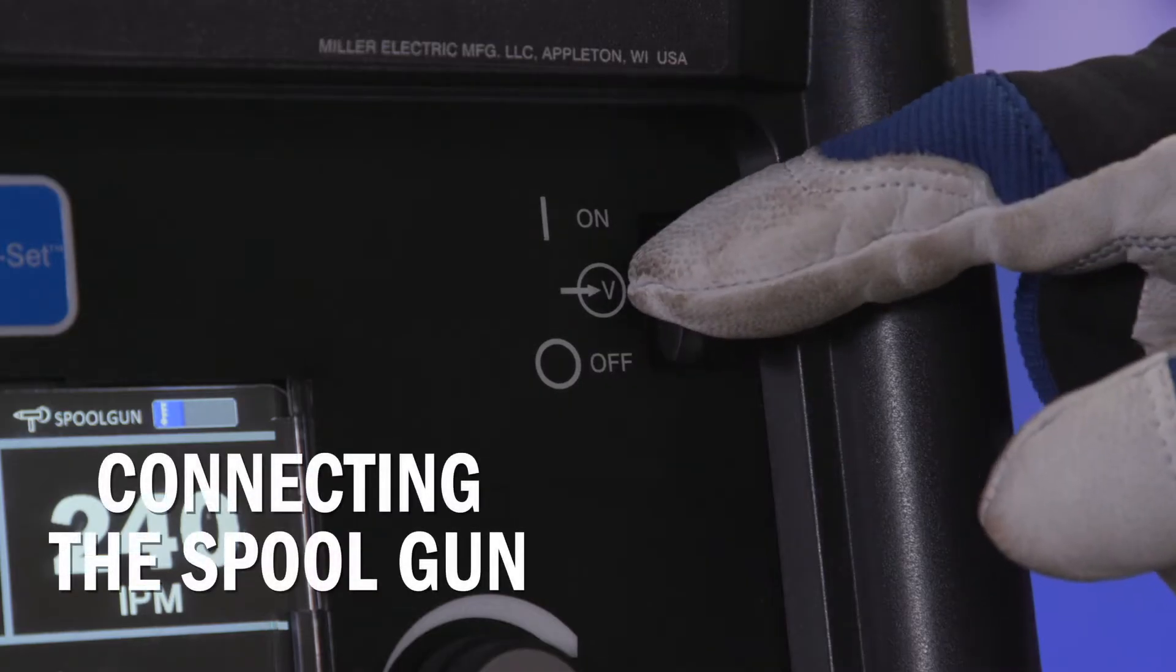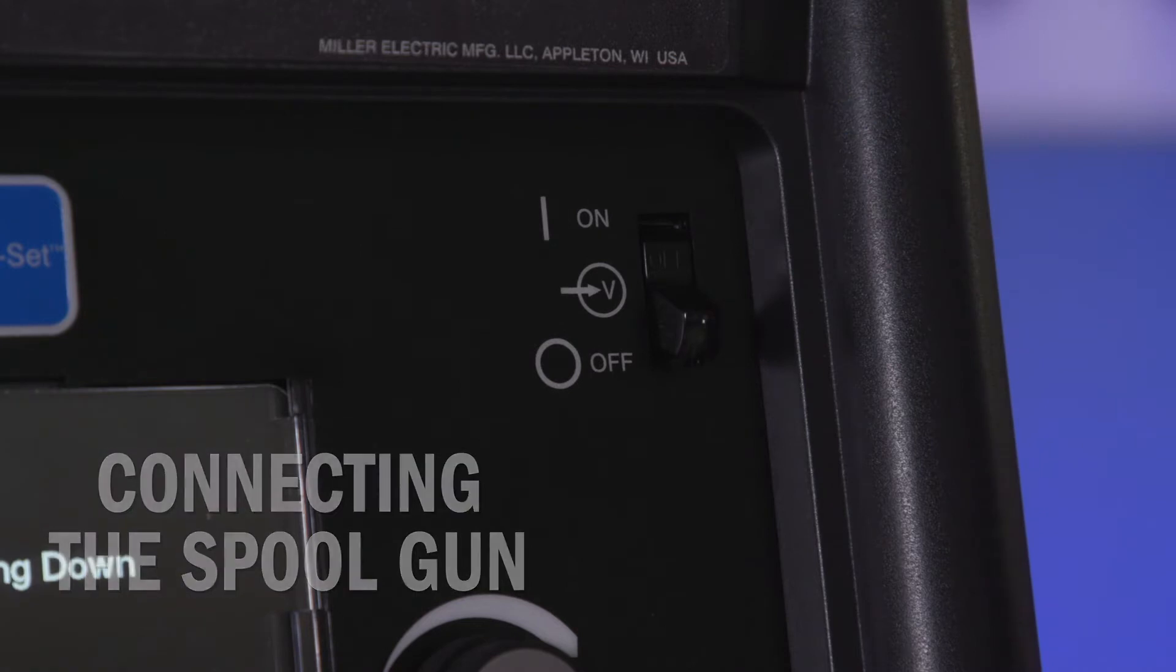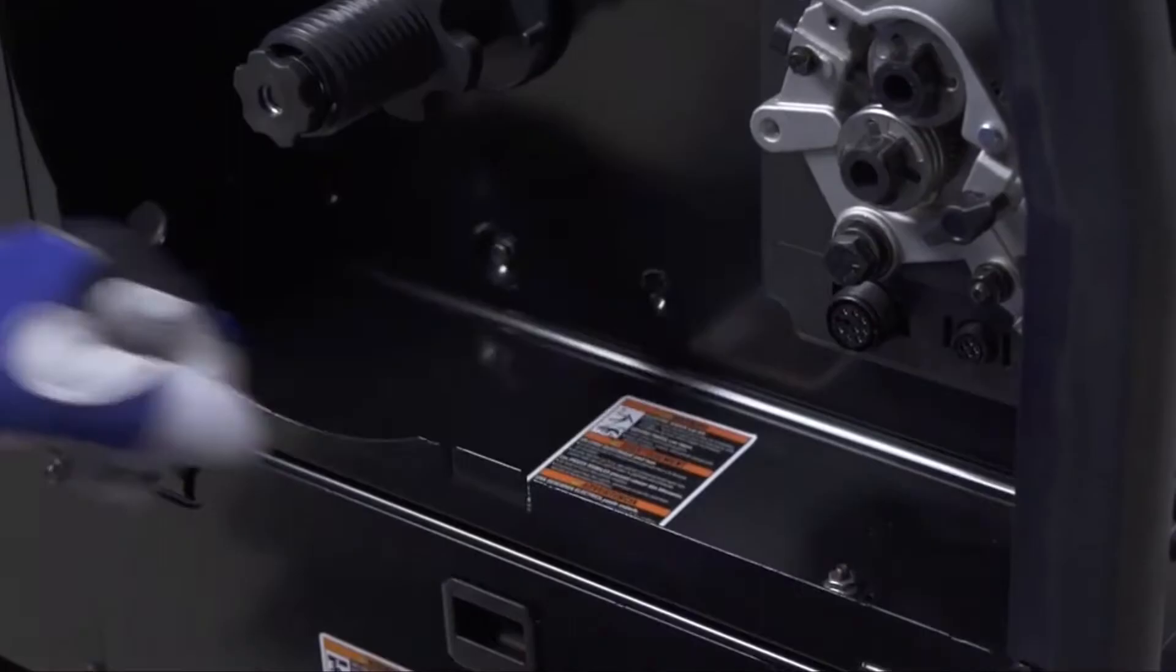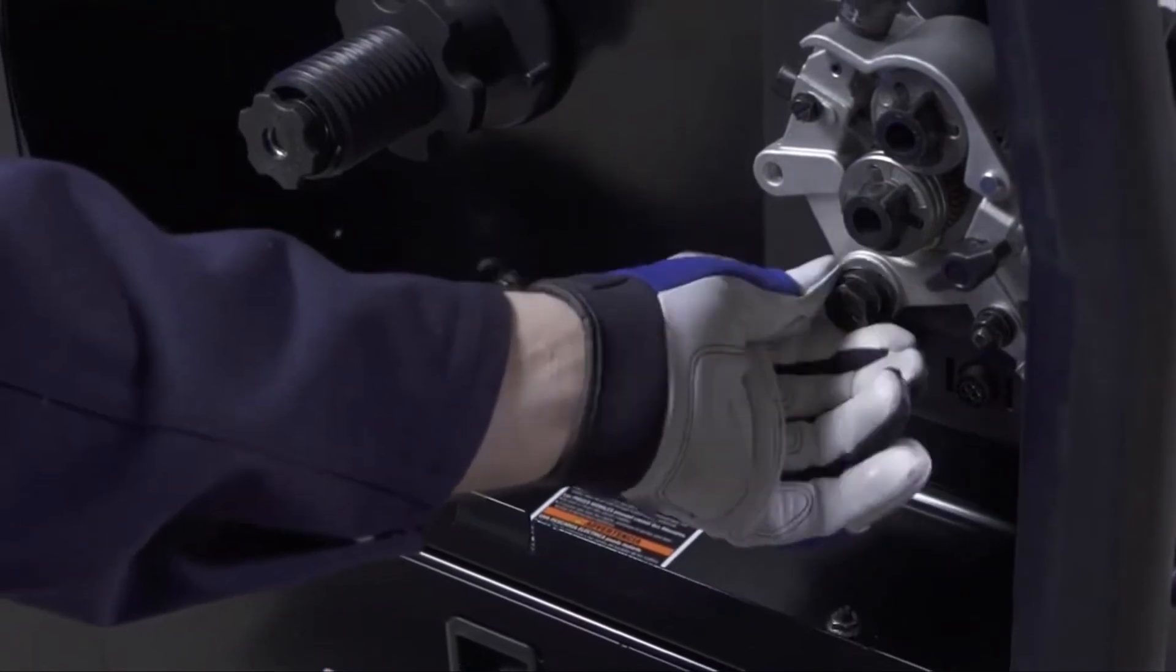To connect the spool gun, first make sure your machine is powered off and open the side door. Remove the bolt from the drive casting.